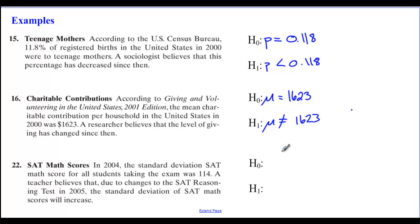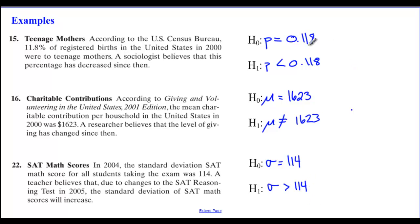For number 22: in 2000, the standard deviation of SAT math scores for all students taking the exam was 114. A teacher believes that due to changes in the SAT reasoning test in 2005, the standard deviation will increase. So H-naught: sigma equals 114, and H-one: sigma is greater than 114. That's the process for setting up our null and alternative hypotheses.